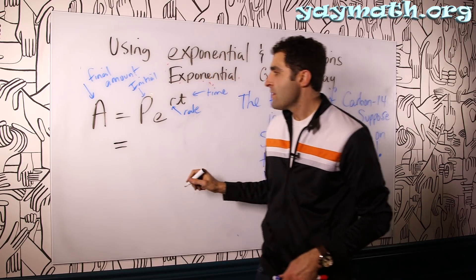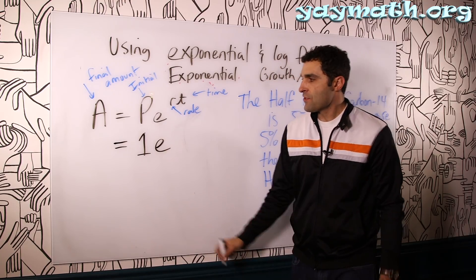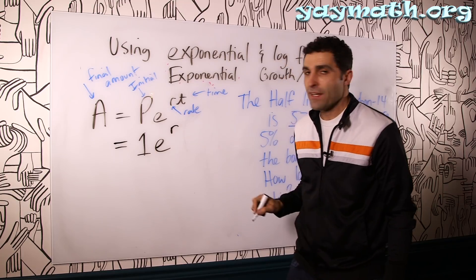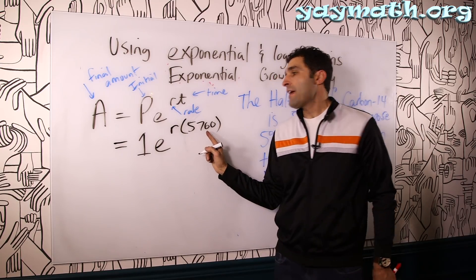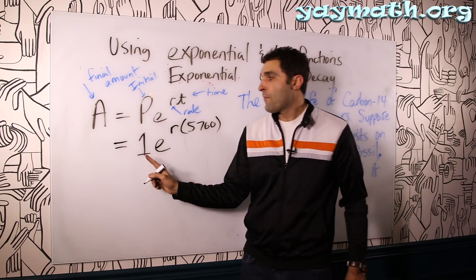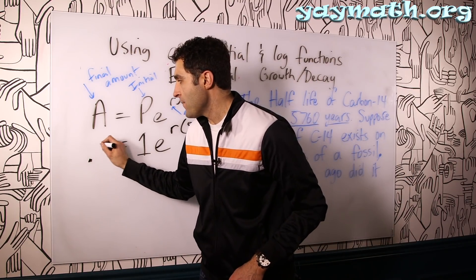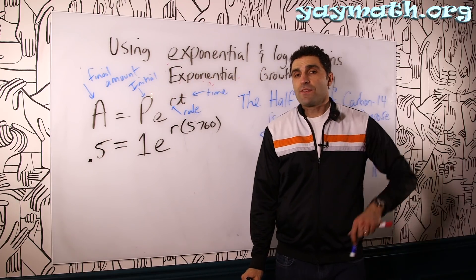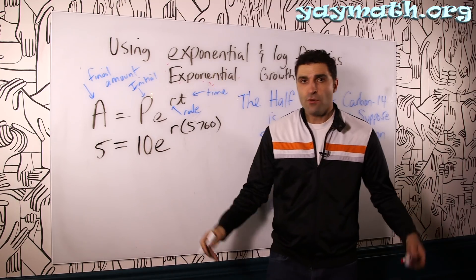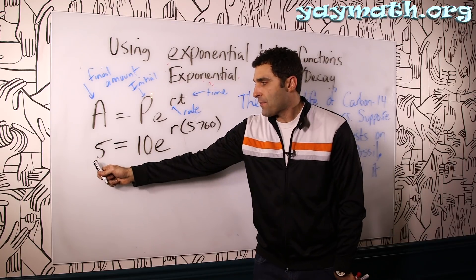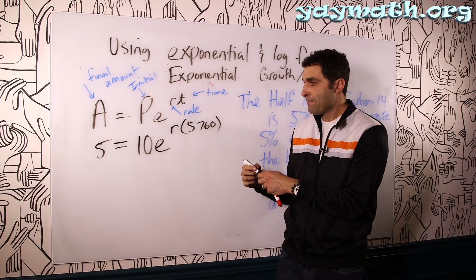If something starts at one unit, hypothetically, you know, just to make it simple, we have E, the rate we don't know, the rate of decay. The time in this case is 5,760. And it takes 5,760 years to go from one, an initial amount of one, to half of itself. That's what half life is. So I'm going to put 0.5 here. Some students, when they're starting out, they actually like to make this something easier. Like if you start at 10, you would end with five. It's totally fine to put it that way. Start with 10, end with five. It takes 5,760 years. And then we're going to solve for the rate of decay.